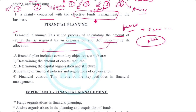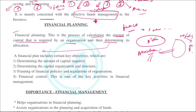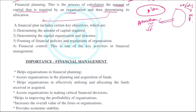First, you need to know how much money or funds are needed by the organization, and then you decide on the allocation — how you will use those funds appropriately. This process of knowing how much money is needed and then allocating it is the financial planning process.